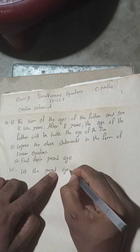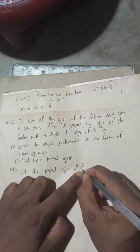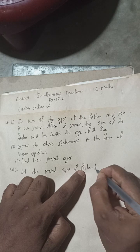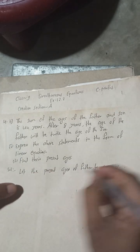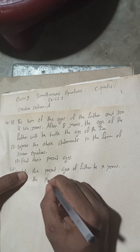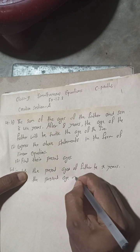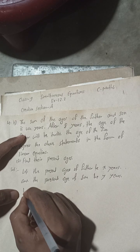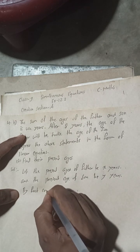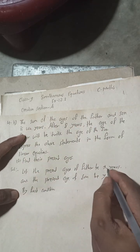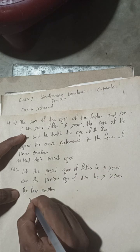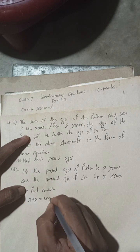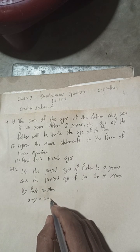Solution. Let the present age of father be X years and the present age of son be Y years. The sum of the age of father and son — father age is X and son age is Y — so sum means addition. So X plus Y equals 44 years.